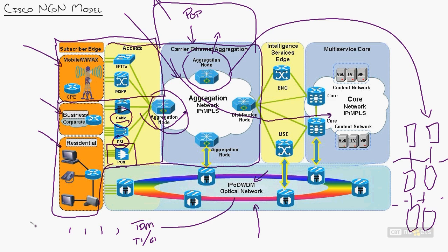TDM essentially carves out little time slots and splices together multiple channels to allow more bandwidth to be added. Time division multiplexing is just sending things at different times so that you can squeeze more onto the wire. DWDM uses different wavelengths — wavelengths of light. We have these different frequencies of light that we can use, and the amazing thing is they haven't even started fully tapping it yet. They've now figured out 100 gigabit Ethernet over a single frequency of light.